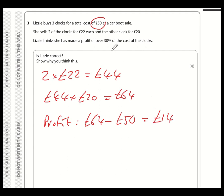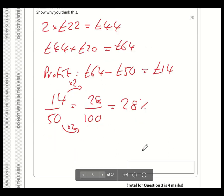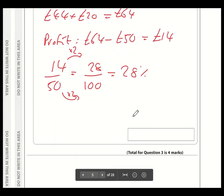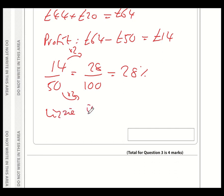And she thinks she's made a profit of 30%. Well, is 14 pounds 30% of 50? What is it as a fraction of 50? Well, it's 14 over 50. So to turn this into a percentage, we're looking for an equivalent fraction out of 100. Remember, per cent means out of 100. We can see we've doubled the bottom number. So for an equivalent fraction, we need to double the top number as well. So the profit she made is 28%. So Lizzie is incorrect. Profit is 28%, not 30%.